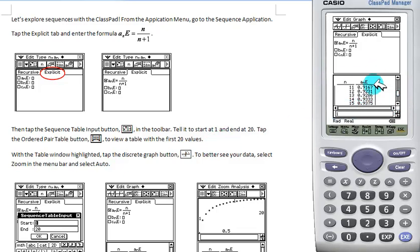Now, if we have the table window highlighted, this is our active window. Here we have available to us the discrete graph button. We'll choose that.